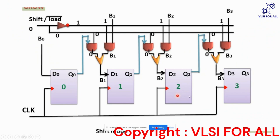Among those types, we are going to learn about parallel input and serial output. Before going to the Verilog code, let us understand what parallel input and serial output is. In digital design, we design the parallel input and serial output by using D flip-flops and some other gates. Here we see there is a signal used as shift-by-load bar, so by using this option we will either shift the data or load the data.